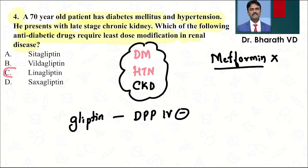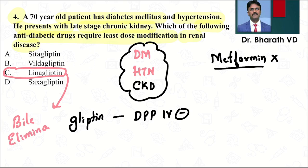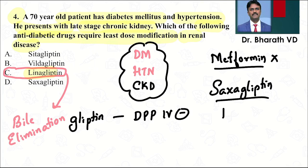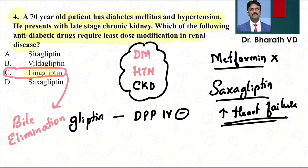The safest option is C — linagliptin, because linagliptin undergoes biliary elimination and enterohepatic recycling. It does not depend on the kidney for excretion, so no dose reduction is required in renal failure. Also note: saxagliptin has been shown in studies to increase the risk of heart failure. The answer is C — linagliptin.